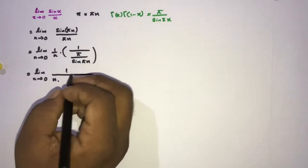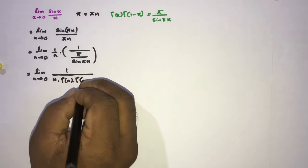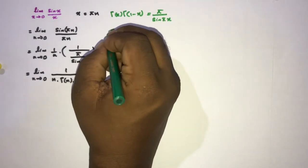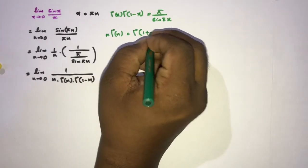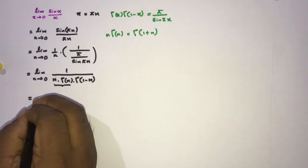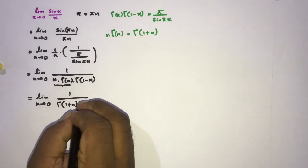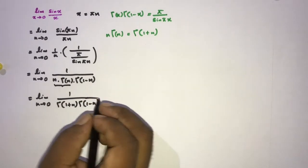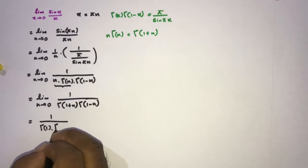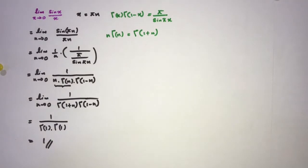We know that π/sin(π·n) = Γ(n)·Γ(1−n). We also know the identity n·Γ(n) = Γ(1+n), so instead of n·Γ(n) we can write Γ(1+n). Now we have the limit as n approaches 0 of 1 over Γ(1+n)·Γ(1−n). Applying 0, we get Γ(1)·Γ(1) = 1·1 = 1. So the answer is 1.